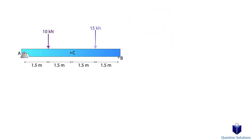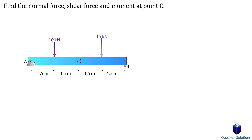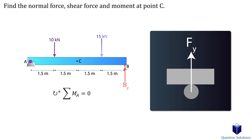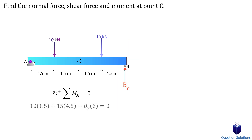Let's start off with a simple example. Here we have a beam and two forces are applied to it. We need to figure out the normal force, shear force, and the bending moment at point C. At A we have a pin support and at B we have a roller. We can easily figure out the support at B by writing a moment equation about point A. Remember, a roller only has one reaction and that's straight upwards, so we have the two forces times the perpendicular distance and the reaction at B times the perpendicular distance.